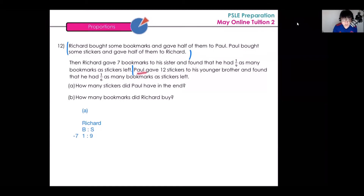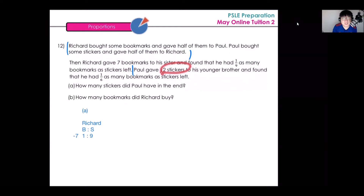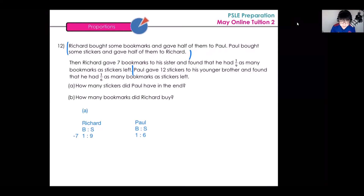Paul gave twelve stickers to his younger brother and found that he had one over six as many bookmarks as stickers left. Notice that Richard gave seven bookmarks to his sister but did not touch his stickers. On the other hand, Paul gave twelve stickers to his younger brother, so Paul's stickers are lacking twelve, but Paul did not touch his bookmarks. For Paul, the ratio of bookmarks to stickers is one to six, with stickers lacking twelve.